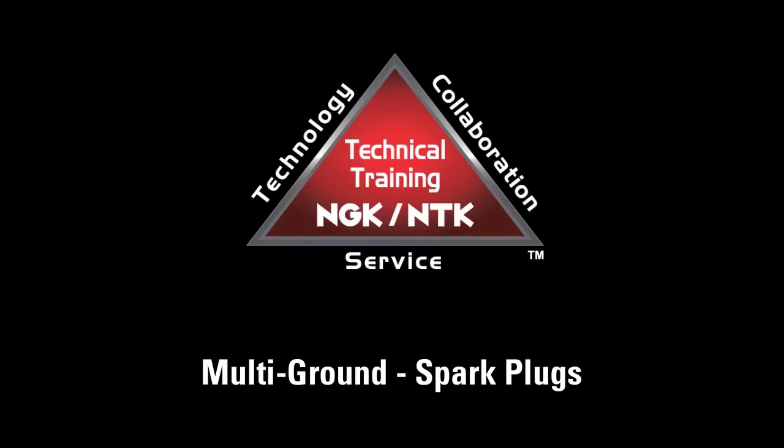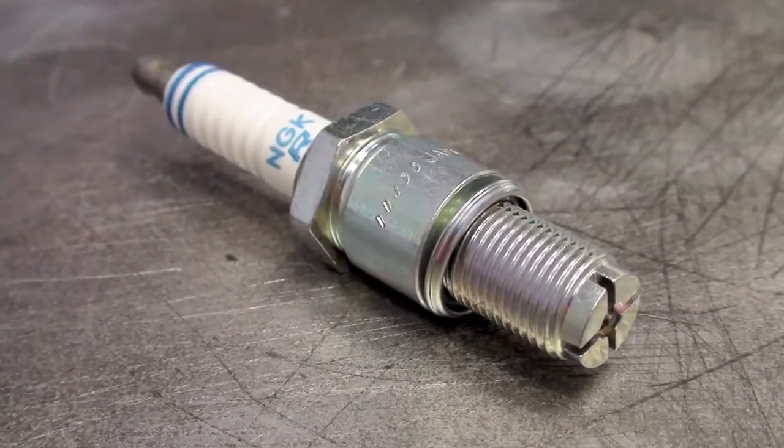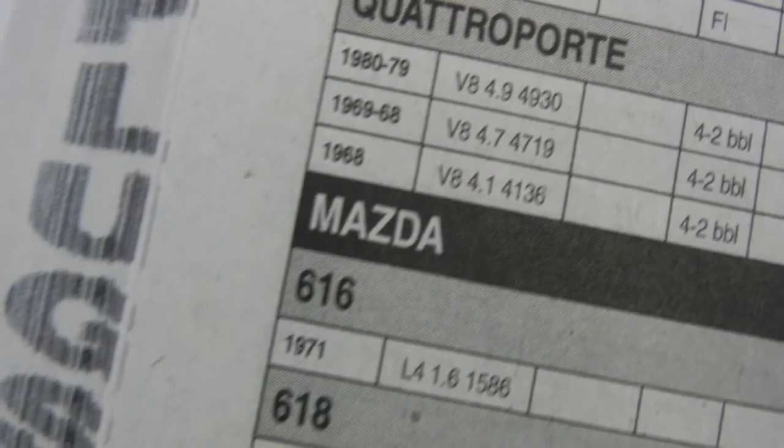One of the most misunderstood spark plug types is the multiple ground electrode spark plug. This spark plug design has been used as original equipment by automobile manufacturers since the 1970s, first appearing in Mazda rotary engines.